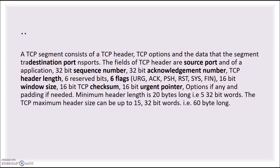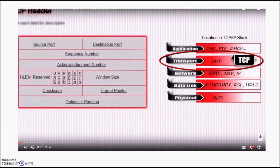TCP/IP mainly contains the source port and the destination port, a 32-bit sequence number, 32-bit acknowledgement number, and the header length. It also contains six reserved flags: URG (urgent flag), ACK (acknowledgement flag), PSH (push flag), RST (reset flag), SYN (sync flag), and FIN (finish flag). Along with these six flags, it also contains a 16-bit window size, 16-bit TCP checksum, and 16-bit urgent pointer.